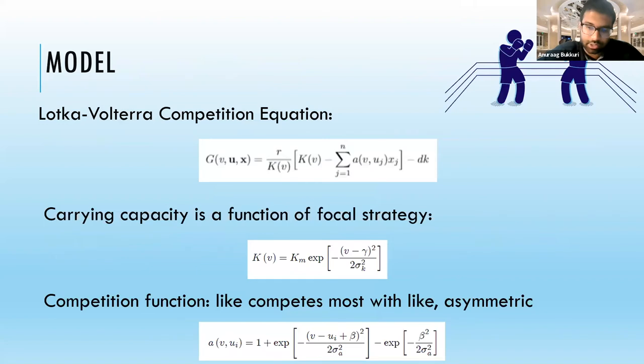For example, increased mutation rates cause not only greater heritable variation, but also an increase in deleterious mutations. Our carrying capacity is a function of our focal strategy, so it's maximized when the trait equals some optimal gamma, and decreases in a Gaussian fashion for deviations from this value.